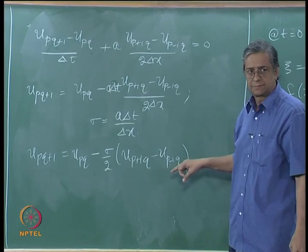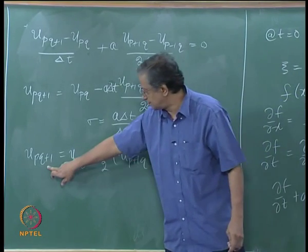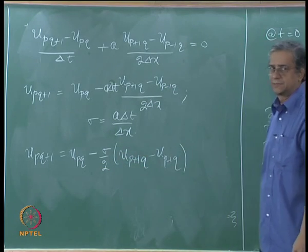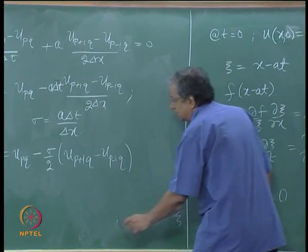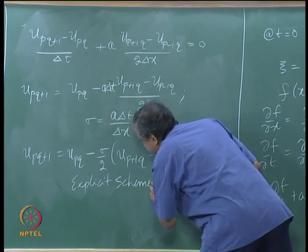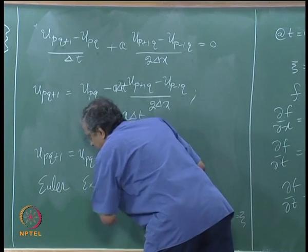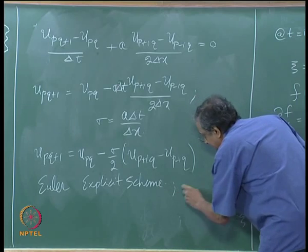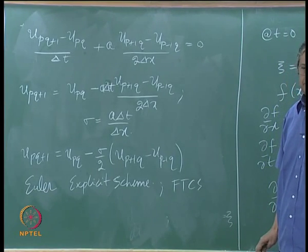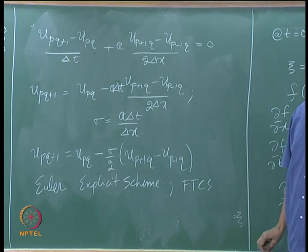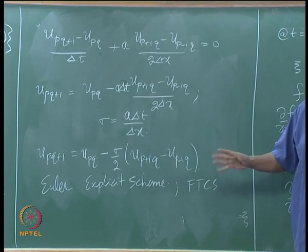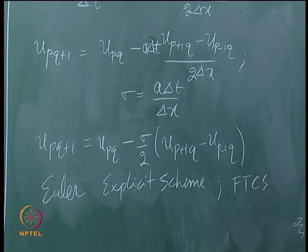Since u_{p,q+1} is given explicitly in terms of quantities at time level q, this scheme is called an explicit scheme — it also goes by Euler explicit. We will call it Forward Time Central Space, or FTCS.